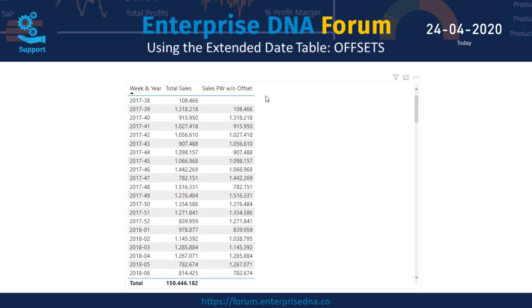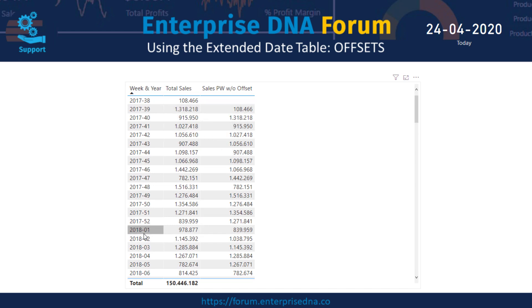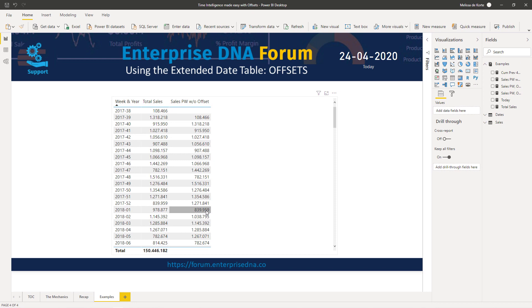Looking at our table, all those values are perfectly aggregated. Moving past a year boundary, the last week sales for 2017 correctly gets calculated for week number one in 2018.